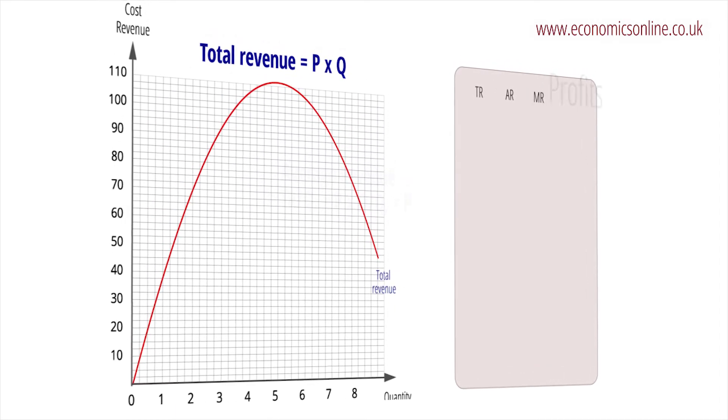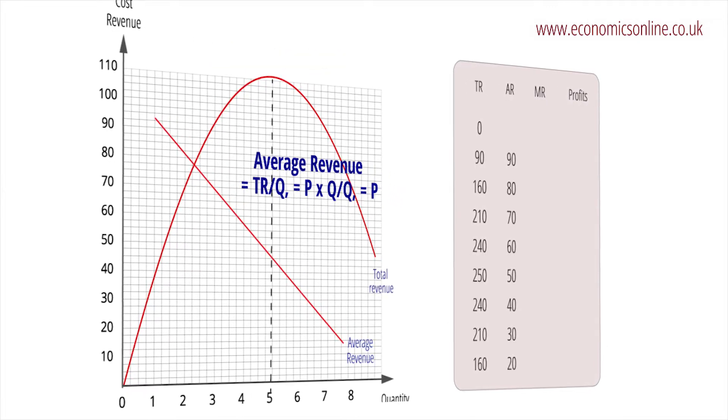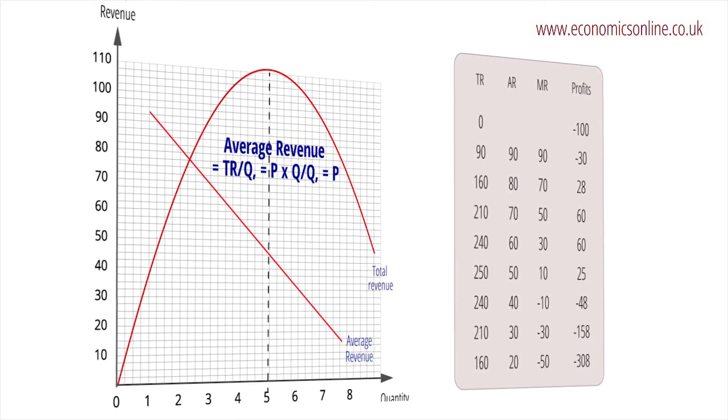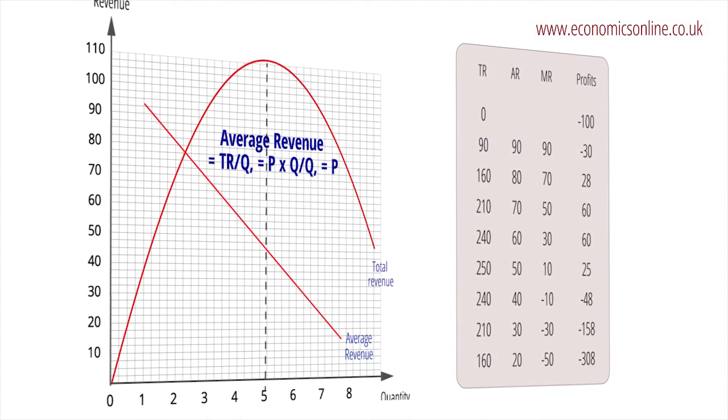Average revenue is found by dividing total revenue by the quantity sold and is equivalent to the price of the product. Average revenue equals price times quantity, Q, divided by Q, which gives price P when the Q's are cross-cancelled in the equation.